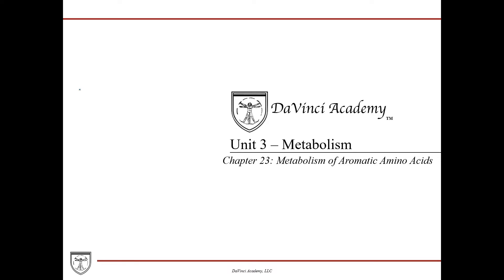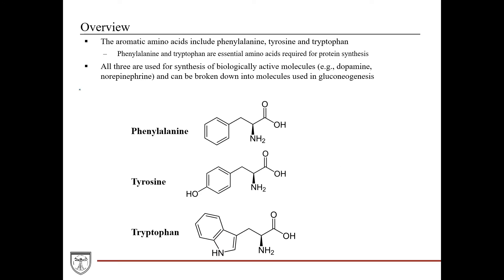For this lecture, unit three, we're going to cover the metabolism of aromatic amino acids. Aromatic amino acids are named as such because they have an aromatic ring as part of their structure, and the aromatic amino acids include phenylalanine, tyrosine, and tryptophan.